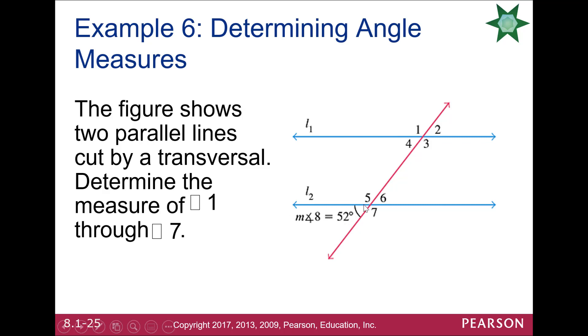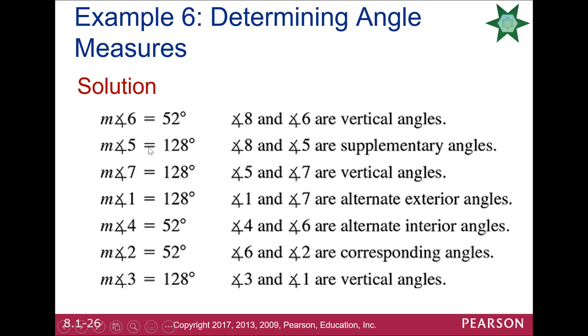So if this is 52 degrees, then angle 6 is 52 degrees, because they're vertical. And so is angle 4, because these are alternate interior angles, or measure of angle 8 and angle 4 are corresponding. So that's 52, and you start to be able to solve all the other angles. Remember, the other ones are supplements, so they'll be 180 minus 52, or 128.